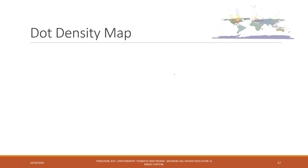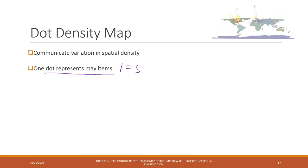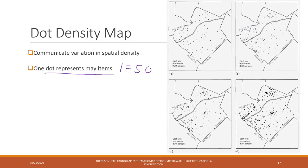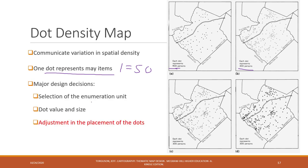We also have the dot density map, which is used to visualize variation in spatial density. Normally we use one dot to represent many items — for example, one dot equals 50 persons. In this case, one dot represents 900 persons, and in another case one dot represents 300 persons. A key consideration is how you define your units or regions, since choosing different regions will give you a different type of dot density map. You also need to choose the appropriate dot value and dot size — dot value means the number each single dot represents.